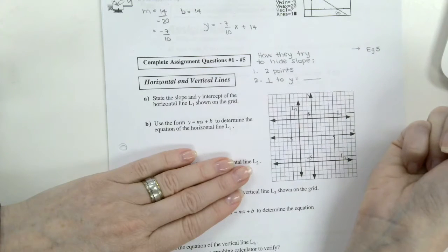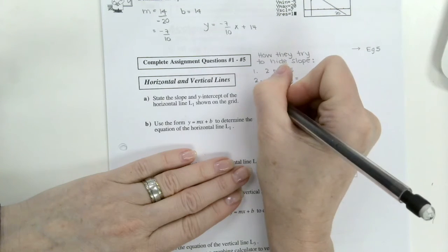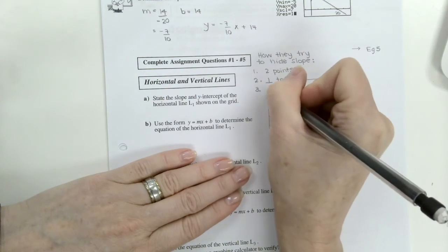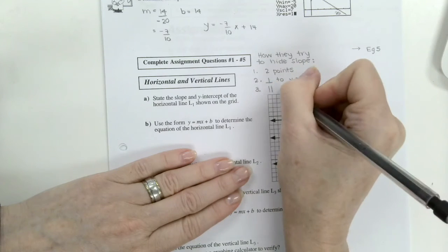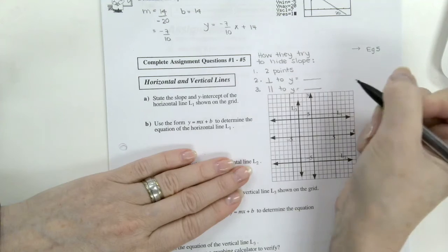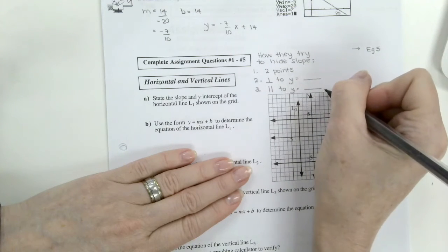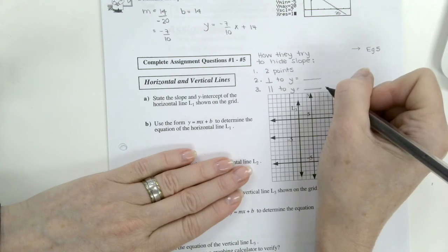Number two, we've also seen that they said it was perpendicular to, and then they give you an equation, y equals something. So then you'll know that you'll have the negative reciprocal of the slope that is in the line that they give you. Number three. Similarly, they might say it's parallel to y equals something. If it's parallel, you're going to have the same slope as what is in the equation given.